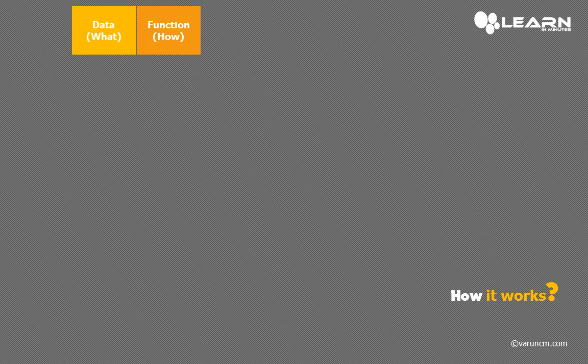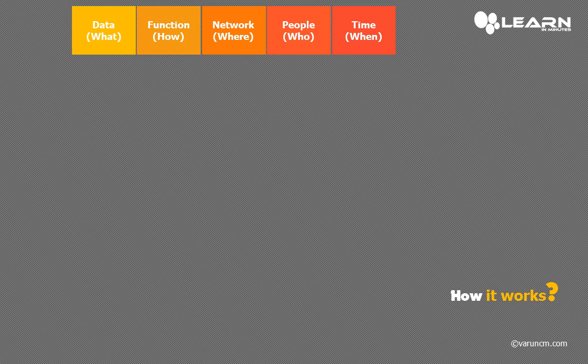The third column is network, which represents where it is happening. The fourth column is people, representing who all are involved. The fifth column is time, representing when it is to be done. And the sixth column is motivation, representing why it is needed.